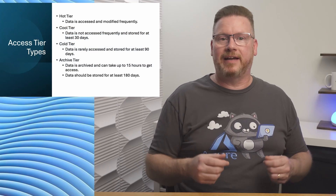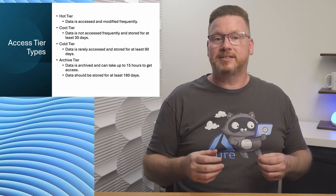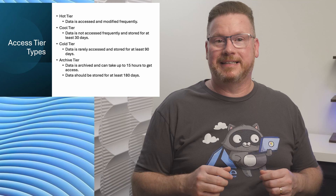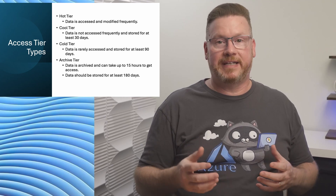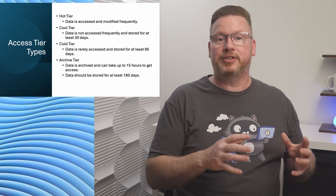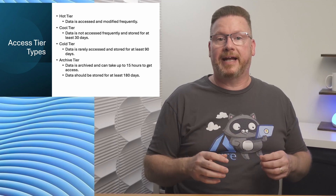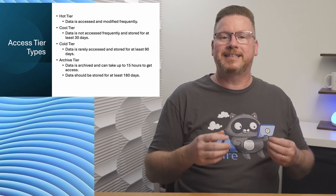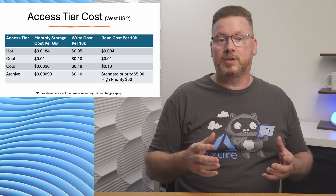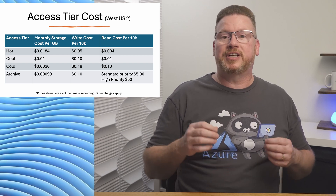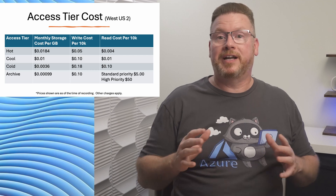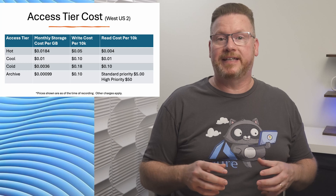Finally, we have the archive tier. This is by far the cheapest option for storing data, but it's also the most costly and time-consuming to access. This is an offline tier — think of it as similar to tape backup. Data in the archive tier is not immediately available and has to rehydrate before you can access it; that can take up to 15 hours with standard priority. Data should be stored for at least 180 days, and removing it before that is subject to an early deletion charge. Archive storage costs $0.00099 per gigabyte. Write access is $0.10 per 10,000 operations, but read operations are significantly higher at $5 per 10,000 operations. There's also a high-priority option for an additional $50 per 10,000 operations, which provides faster rehydration.